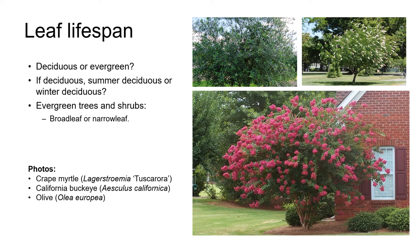In contrast to evergreens, deciduous plants usually drop all their leaves at one particular time of year as an adaptation to environmental stress. This might be the cold of winter, in which case plants are described as being winter deciduous, or the stress might be the heat and drought of summer, in which case plants are summer deciduous. Some plants just drop some of their leaves in response to environmental stress and we can refer to them as semi-deciduous.